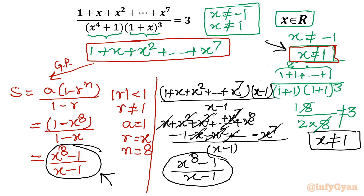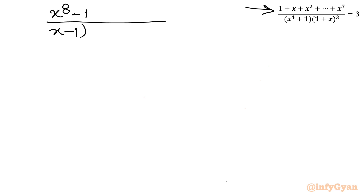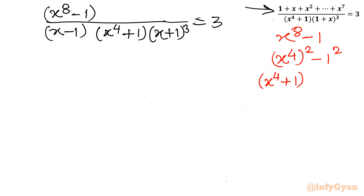Now I will substitute this into the equation's numerator. Writing (x⁸ − 1) over (x − 1), with the remaining denominator (x⁴ + 1)(x + 1)³ equal to 3. The numerator x⁸ − 1 can be written as (x⁴)² − 1², and applying the difference of two squares formula a² − b² = (a+b)(a−b), we get (x⁴ + 1)(x⁴ − 1).